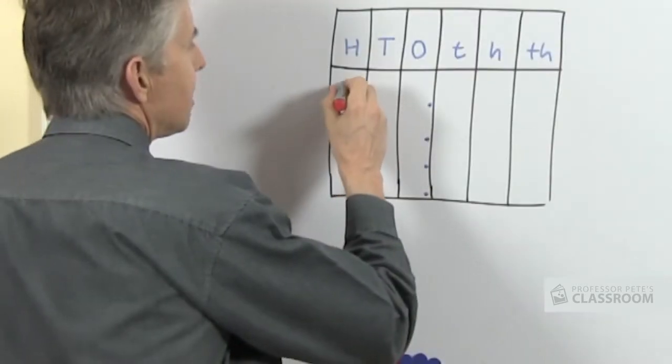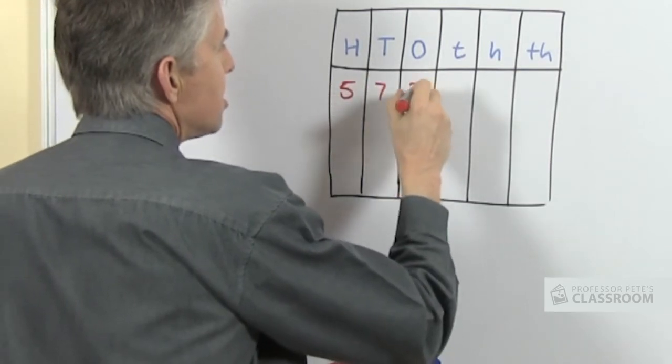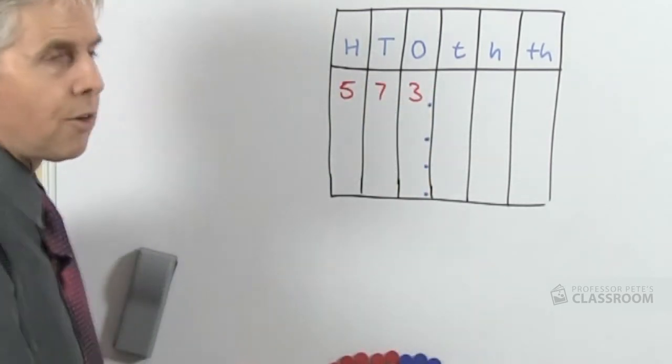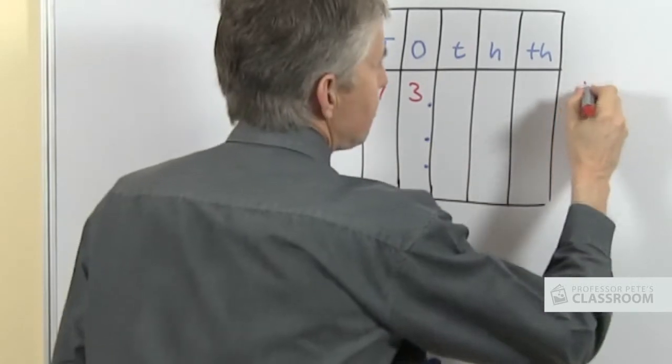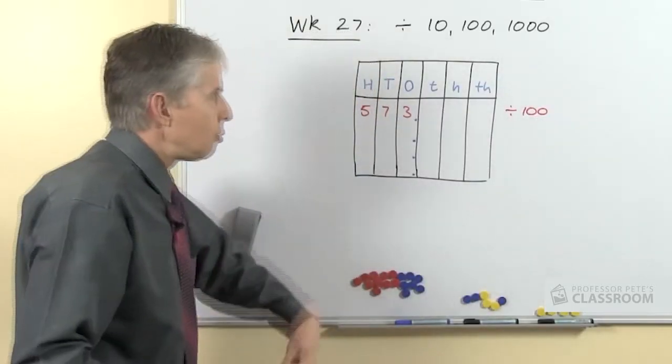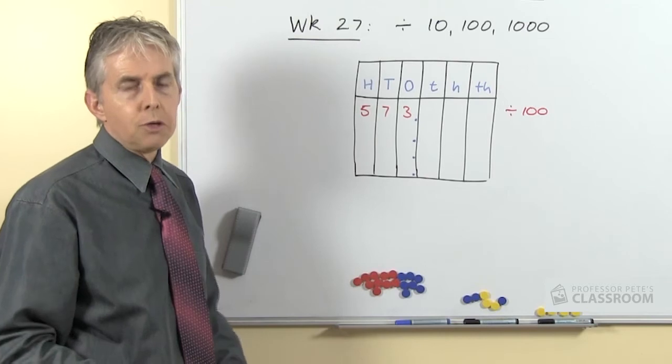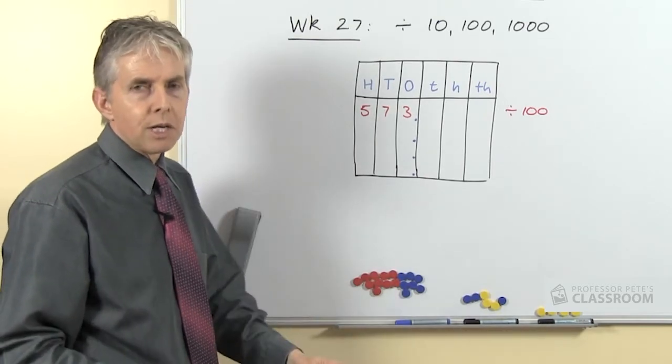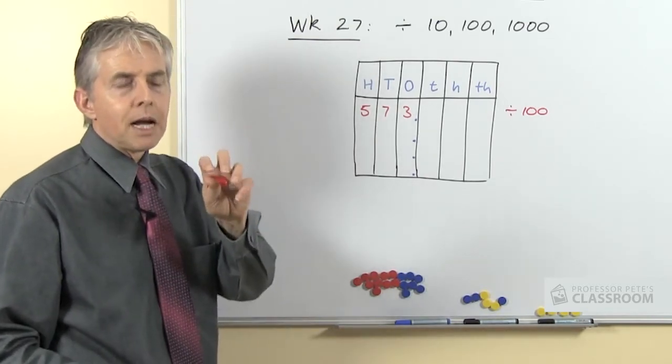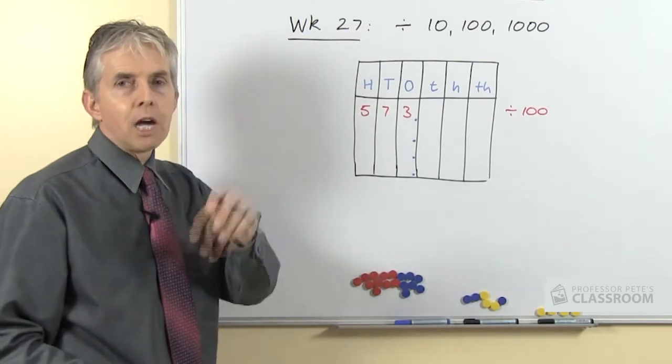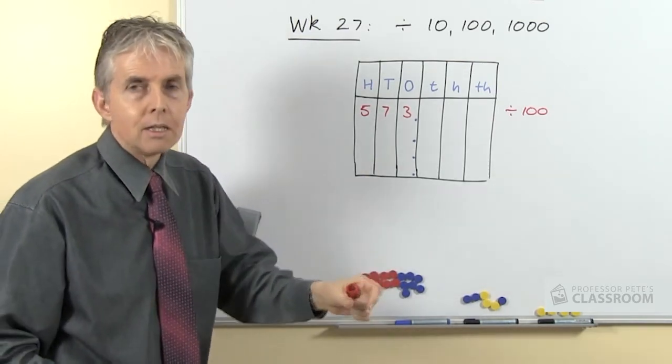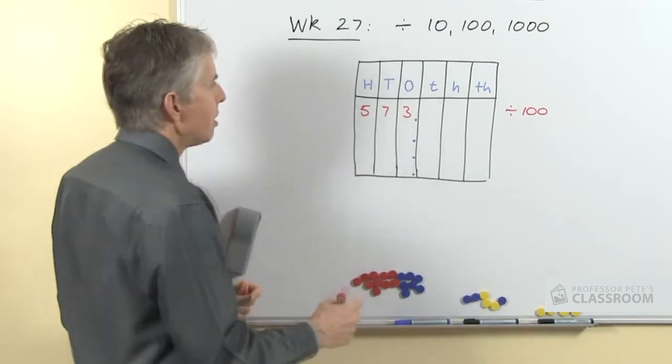So let's start with a number 573 and let's divide that by 100. So we know we're going to move everything 2 places. We can establish that with our students through understanding what that means and the fact that 100 is like 2 places, so if we divide by 10 that's moving 1 place and so on.